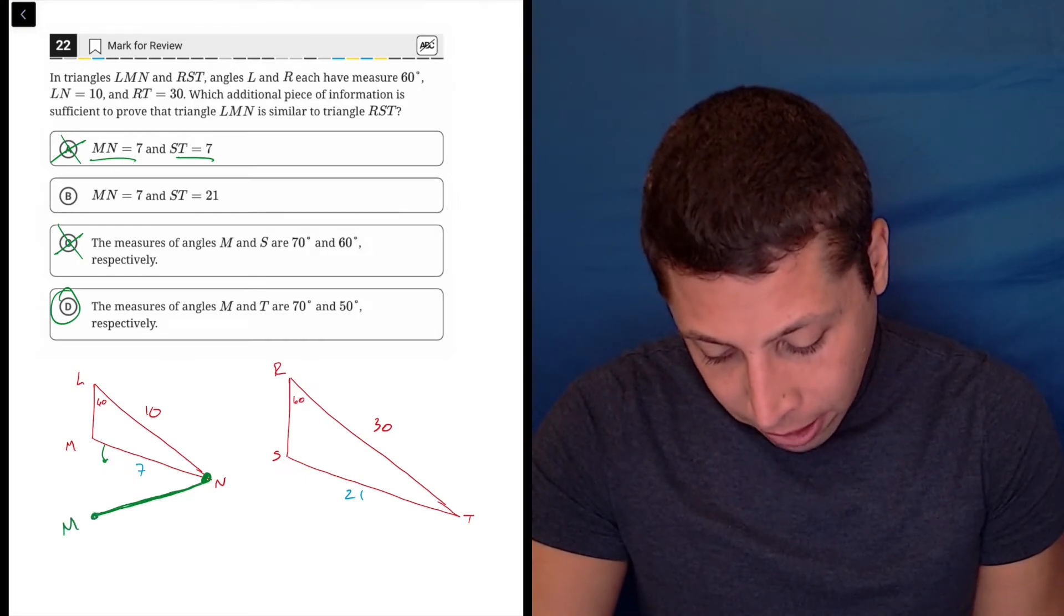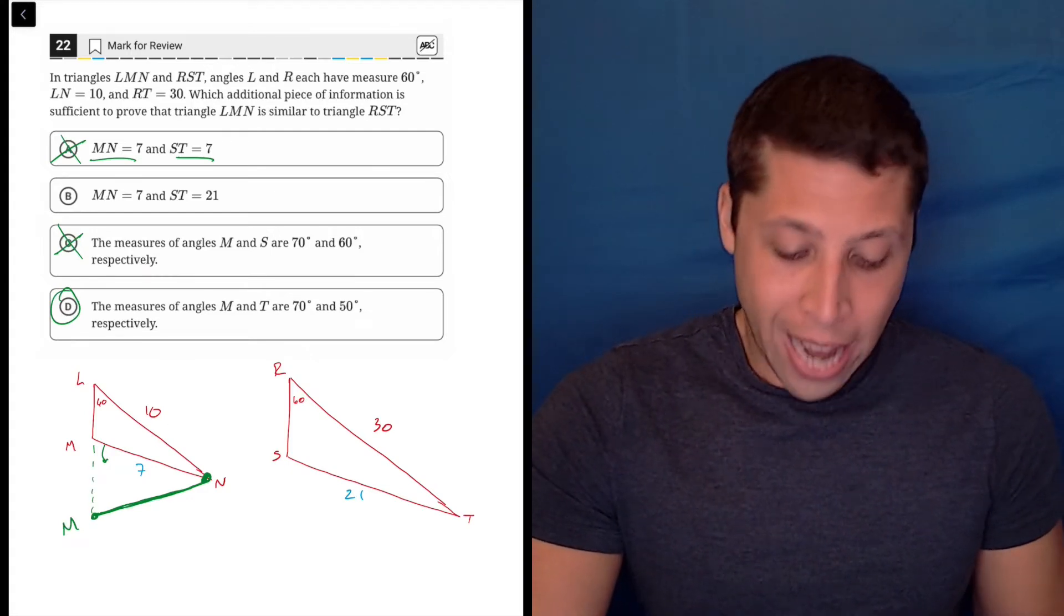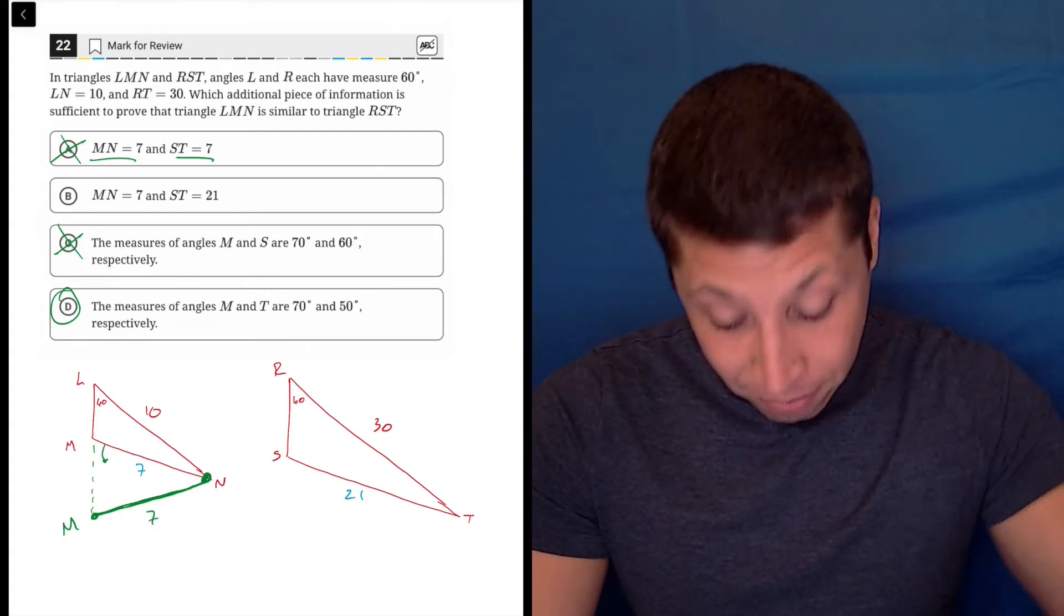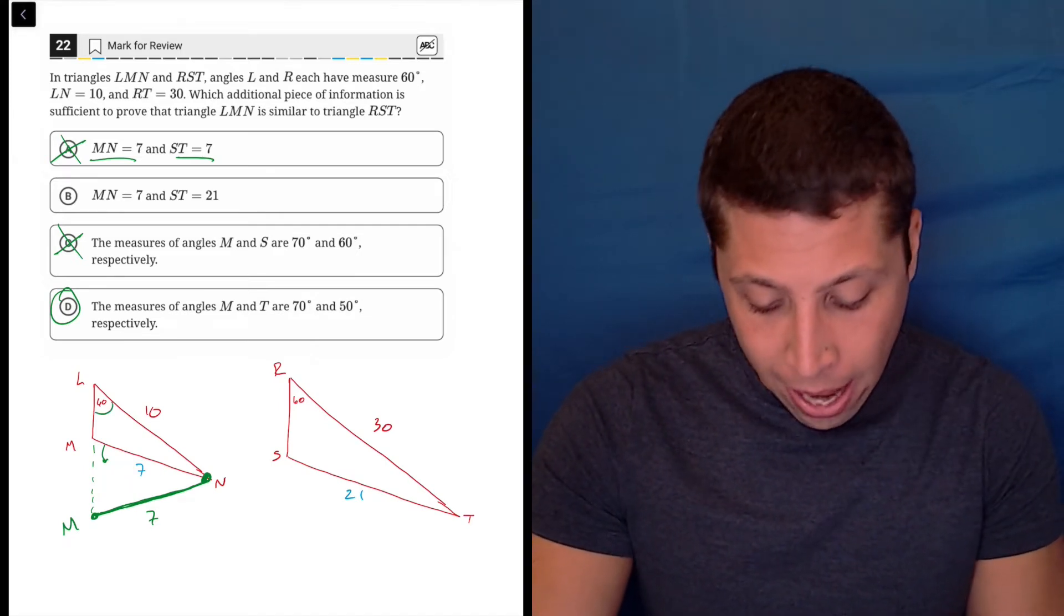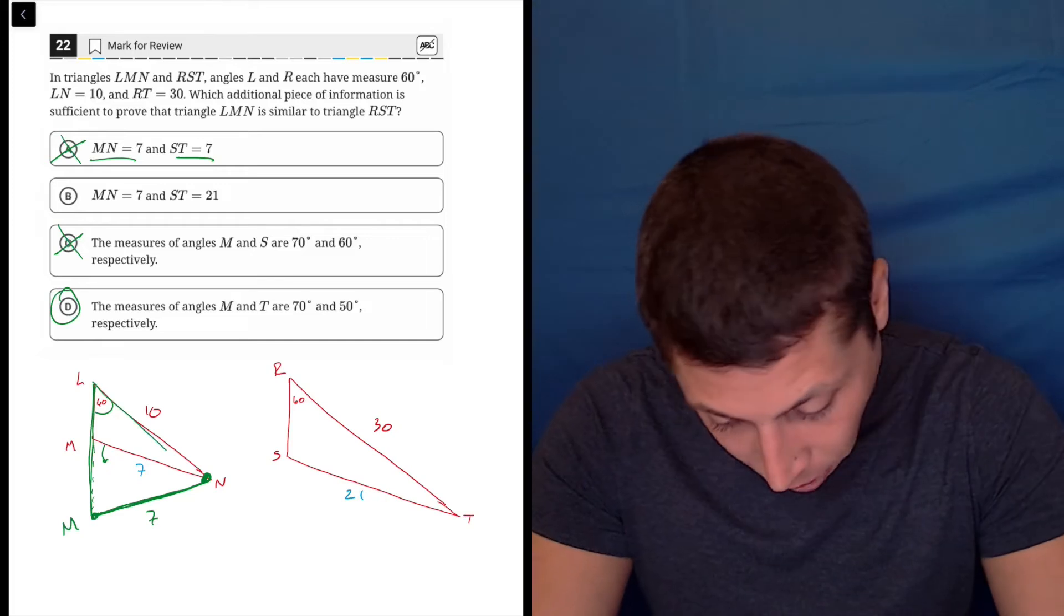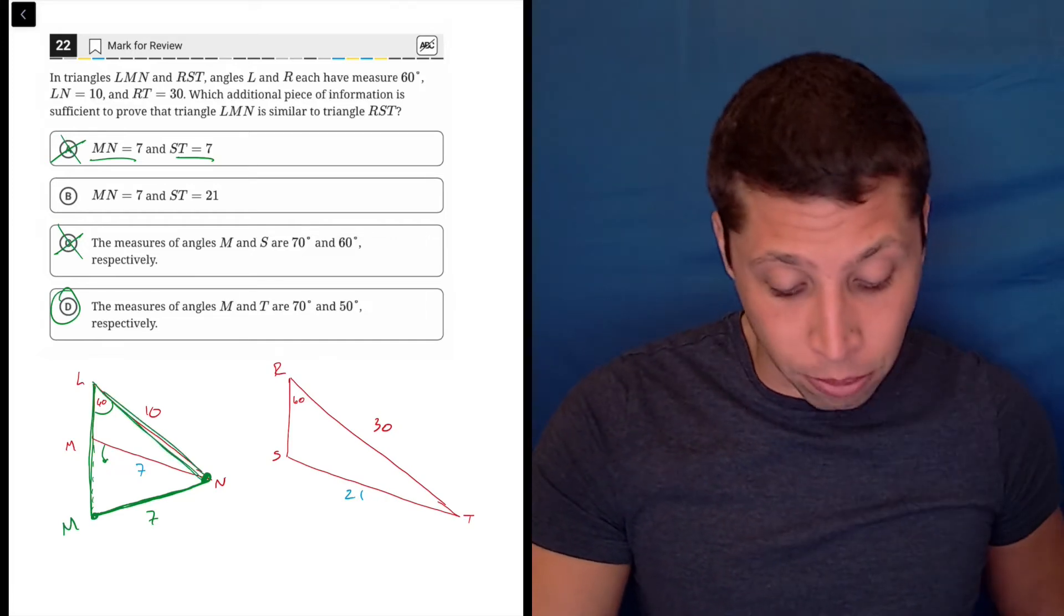So point M is now down here, and we'd have the 7, we'd have the 10, we'd have the 60, that hasn't changed, but now our triangles look different, right? That green triangle does not look like the red RST.